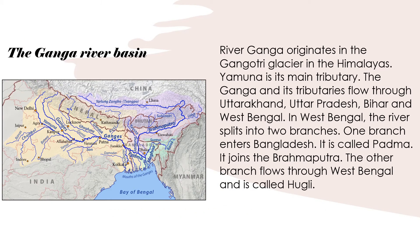The river Ganga originates in the Gangotri Glacier in the Himalayas. Yamuna is its main tributary. The Ganga and its tributaries flow through Uttarakhand, Uttar Pradesh, Bihar and West Bengal. In West Bengal, the river splits into two branches. One branch enters Bangladesh and is called Padma; it joins the Brahmaputra. The other branch flows through West Bengal and is called Hooghly.